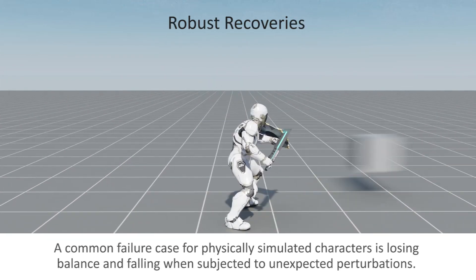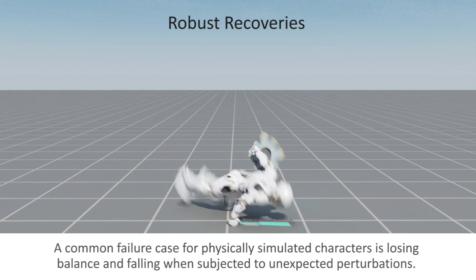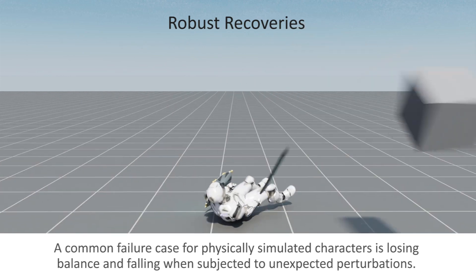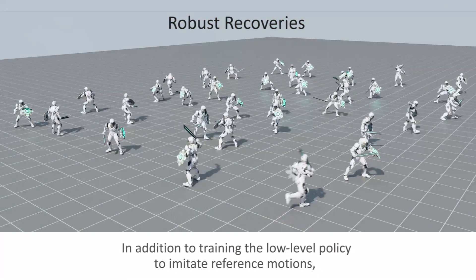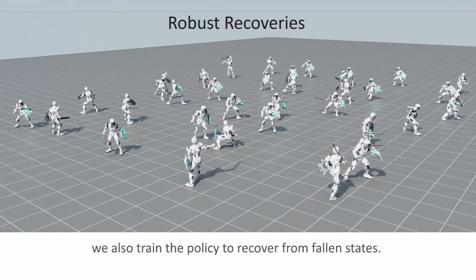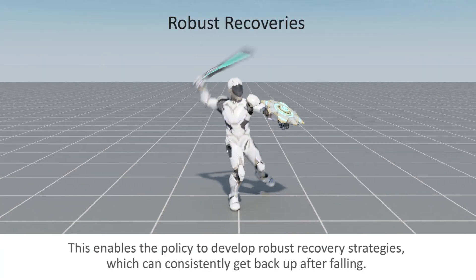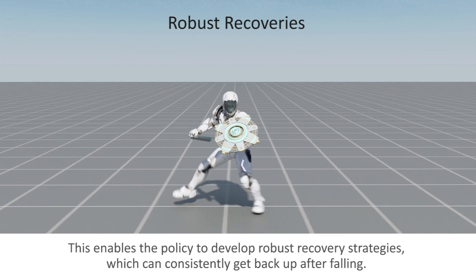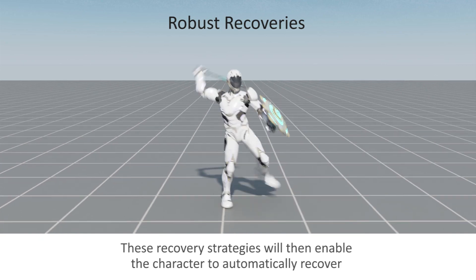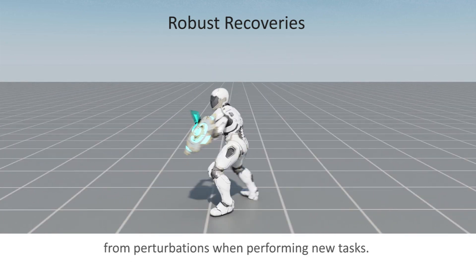A common failure case for physically simulated characters is losing balance and falling when subjected to unexpected perturbations. In addition to training the low-level policy to imitate reference motions, we also train the policy to recover from fallen states. This enables the policy to develop robust recovery strategies, which can consistently get back up after falling. These recovery strategies will then enable the character to automatically recover from perturbations when performing new tasks.